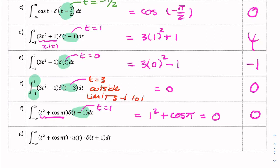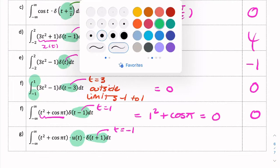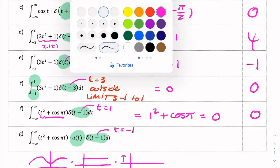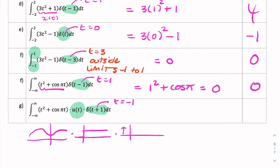And for this final example, you have an impulse function here, t equals minus 1. But you also have this unit step. This unit step means that you're multiplying... So let me show you what the signal will look like. You have some function which exists for negative and positive time. You're multiplying it by a unit step that only exists for positive time, and you're multiplying that by a unit impulse at t equals minus 1. So when will these three have a non-zero overlap?